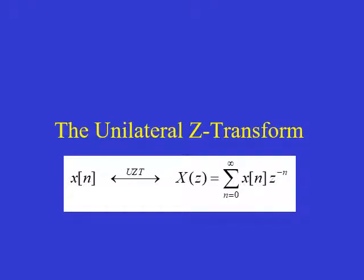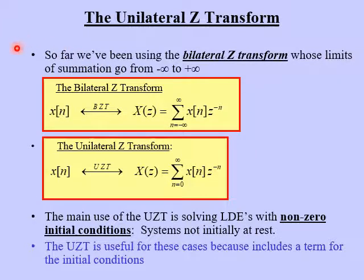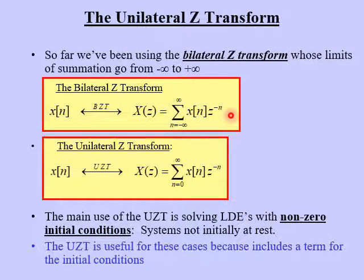In this video, we'll look at the unilateral Z-transform. This is the last video from Chapter 10 on the Z-transform. So far in Chapter 10, we've been using the bilateral Z-transform, which literally means two-sided. This is because the summation for the transform went from negative infinity to positive infinity. Notice that going from negative infinity to zero is the left side of the time axis, and going from zero to infinity is the right side.